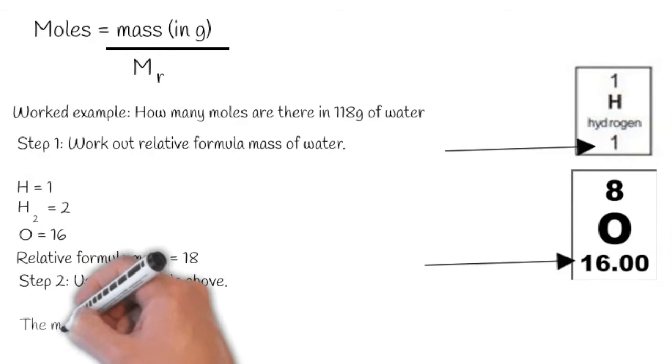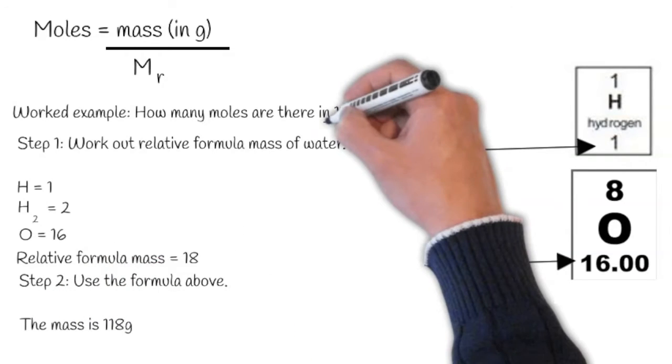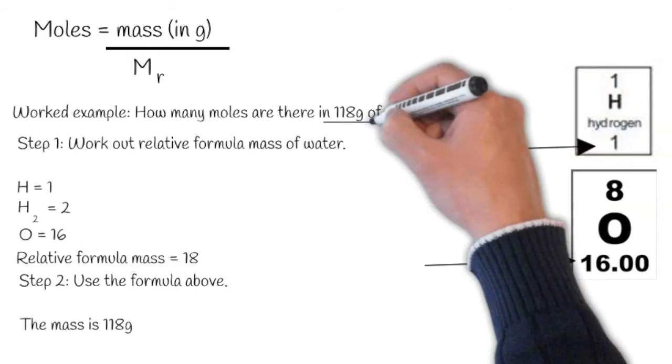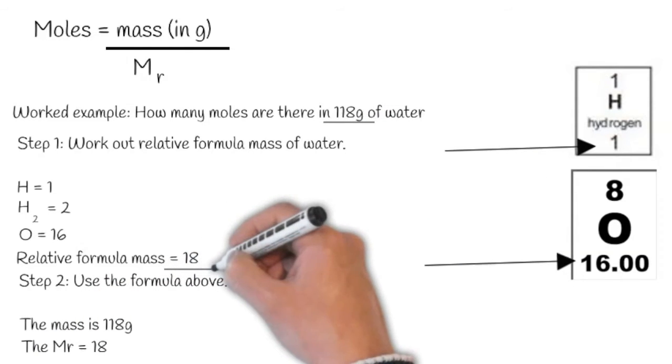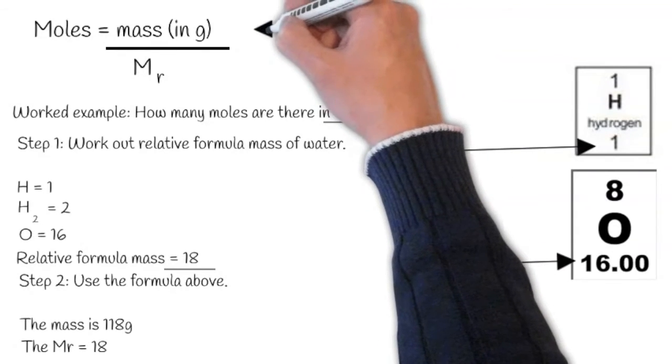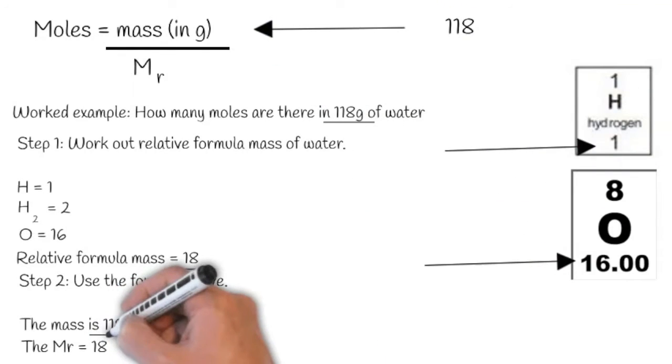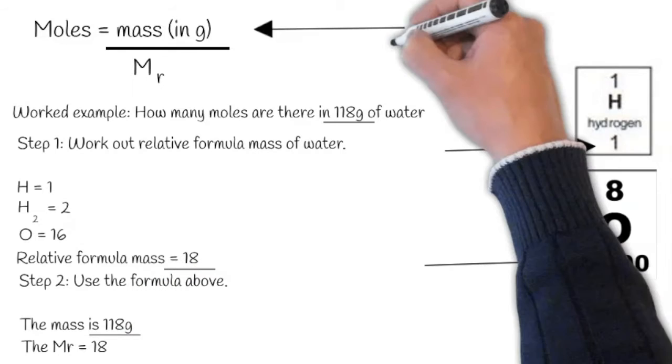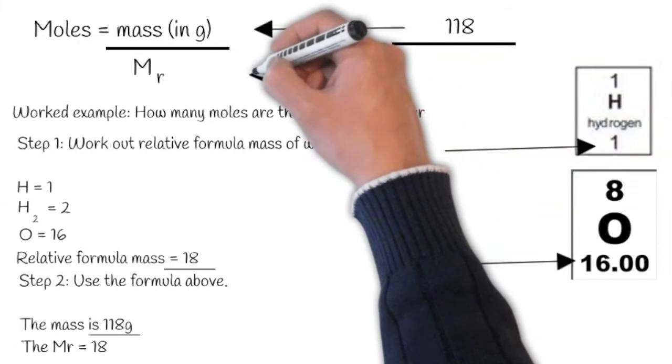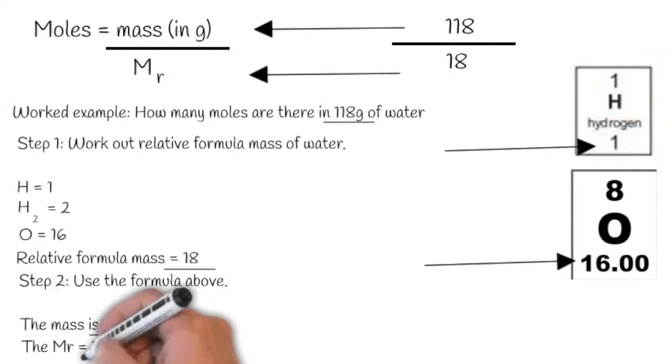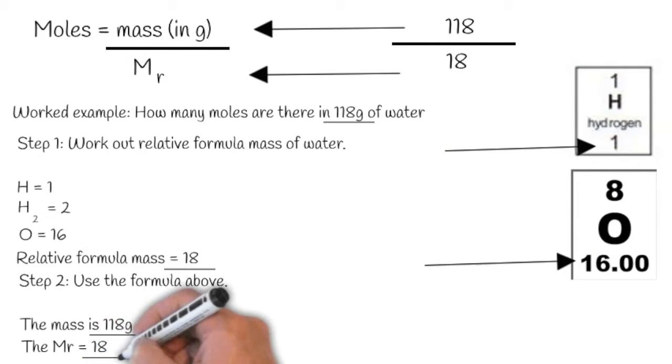Step two, we can use the formula above. The mass in the question is 118 grams. The Mr we just worked out is 18. So we're going to put this into the equation to make 118, which is remember the mass, divided by the Mr, which is 18, which we worked out earlier, to get 6.6 moles.